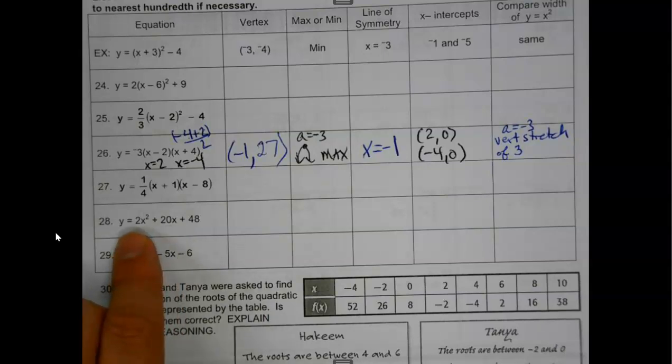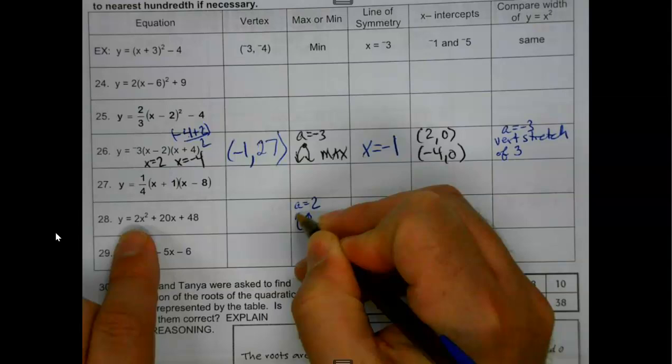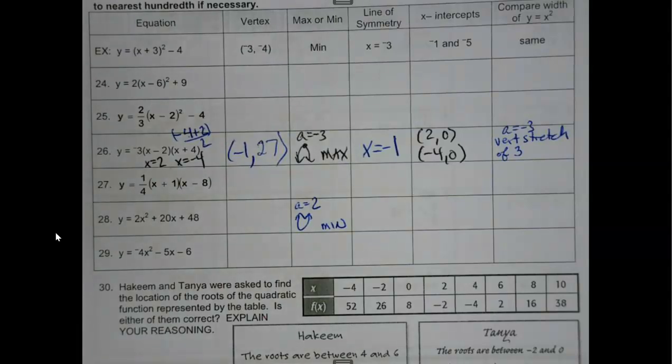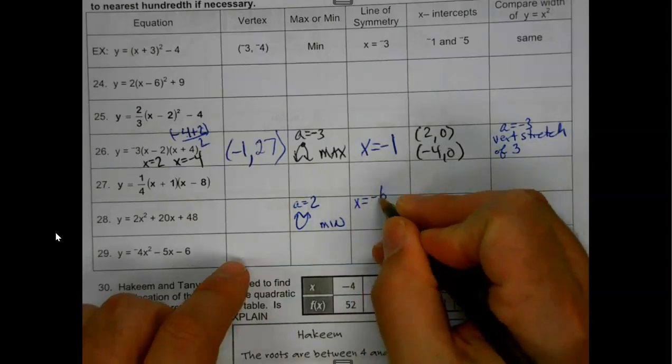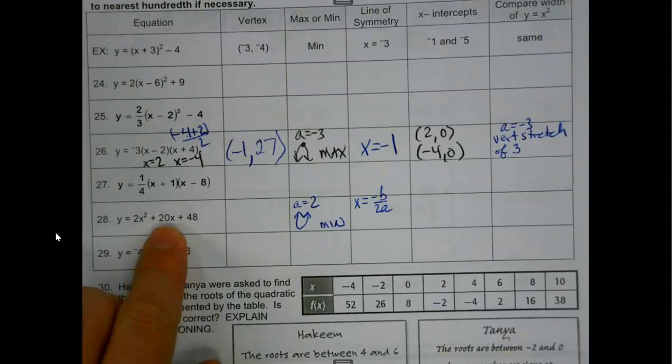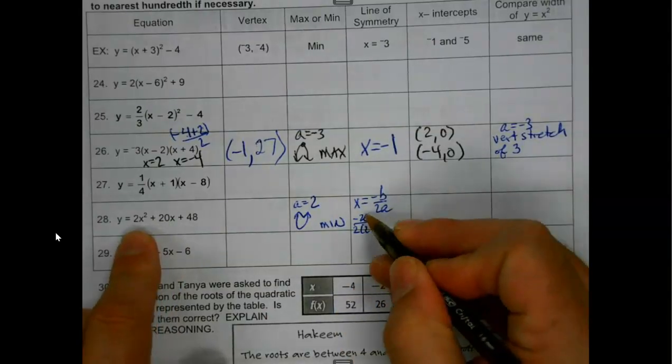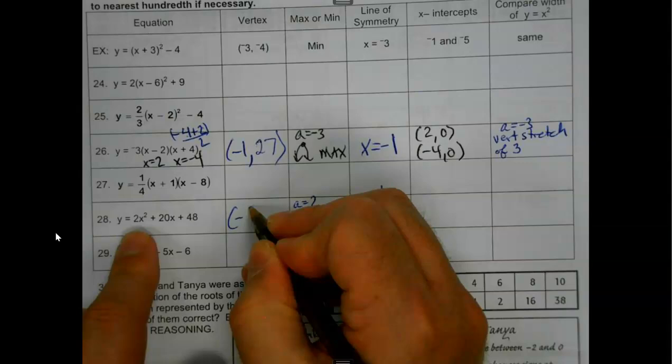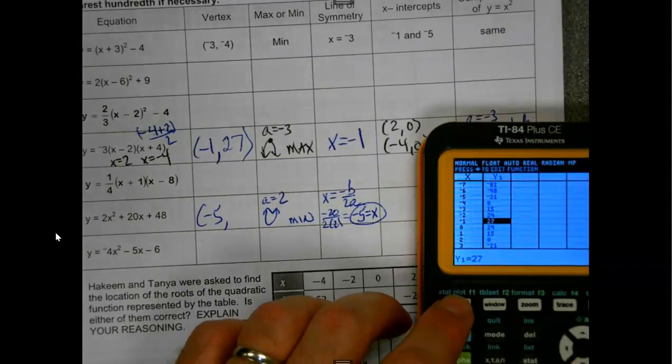And then the last one I'll say, because there's a couple here in standard form, we'll play with one of those too. Here again, do the stuff you can do easy. So, max or min? My a value is 2. This opens up. That's going to be a min. Now, the rest of this, I'm going to have to do a little bit of work. So, to get my x value, my line of symmetry, I'm going to do the opposite of b over 2a. The opposite of b over 2a, negative 20 over 4 would be negative 5.